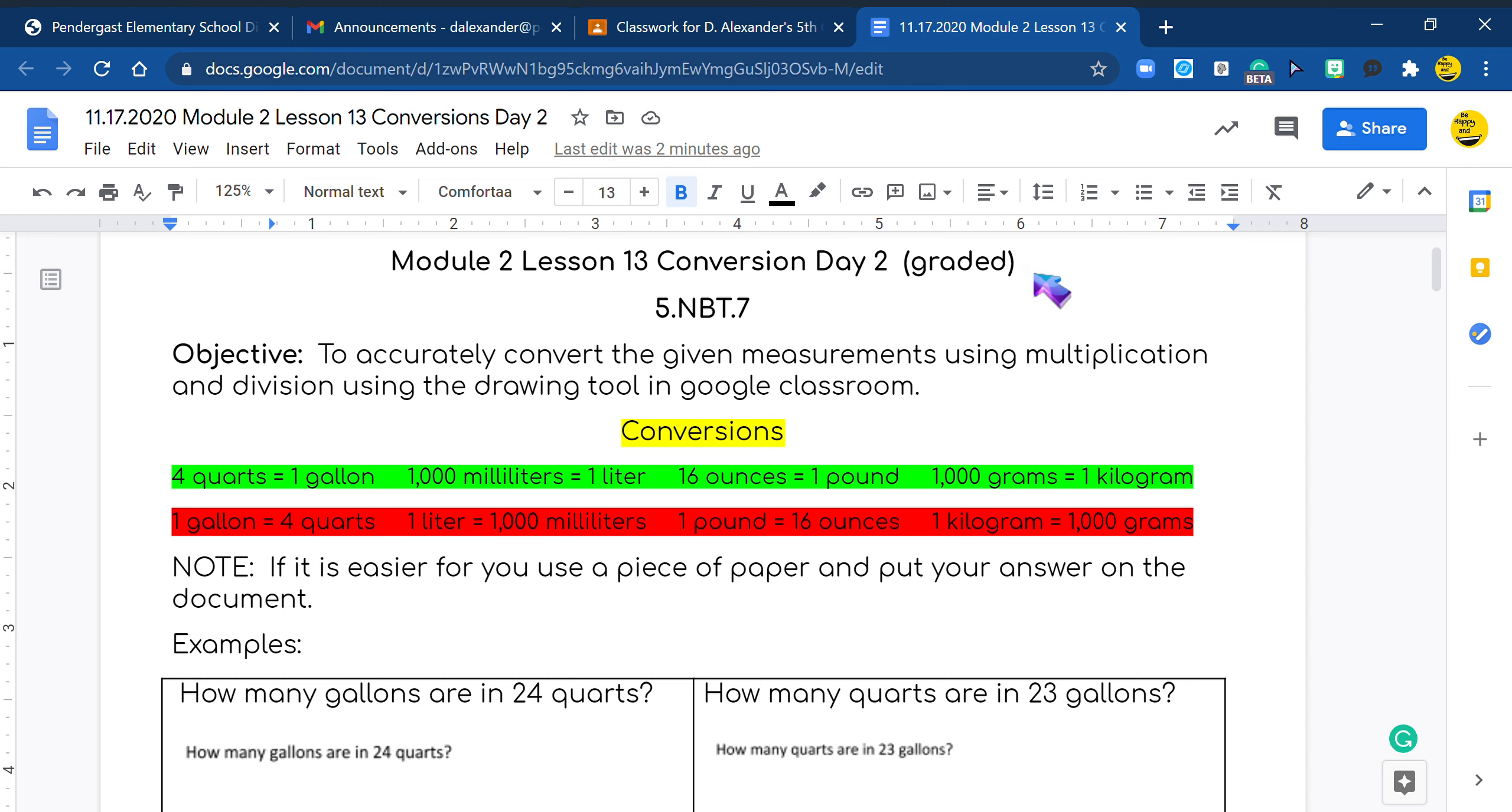Hey guys, it's Miss Alexander and today we are working with conversions. Yesterday we worked with feet and yards and inches and millimeters and centimeters and meters. Today we're working with items that we'd be using in the kitchen, like baking or cooking. So we're using quarts and gallons, milliliters, liters, ounces, pounds, grams and kilograms.